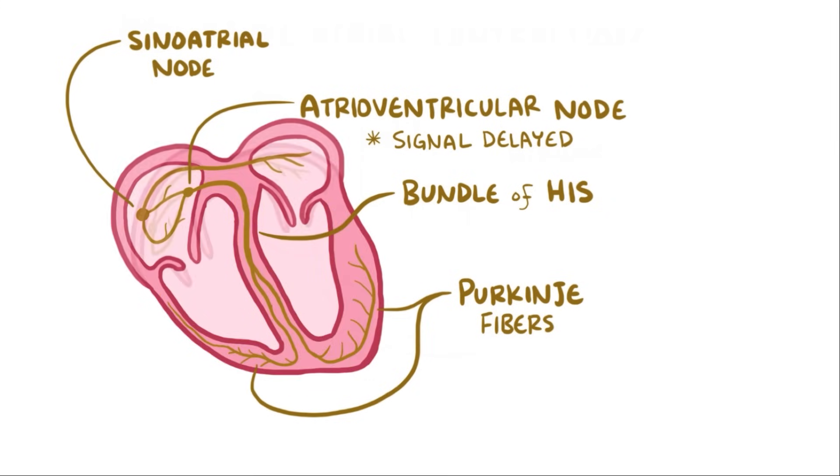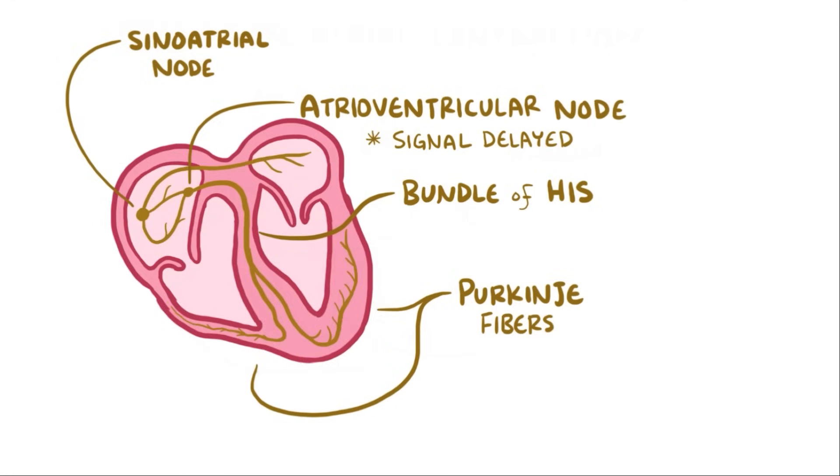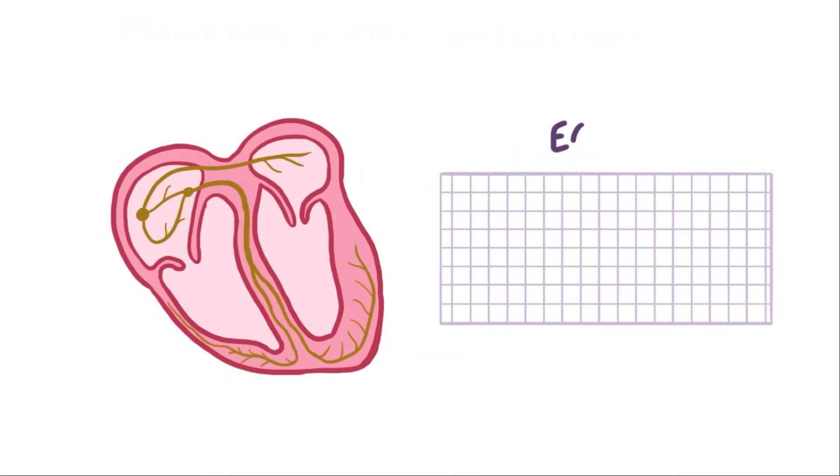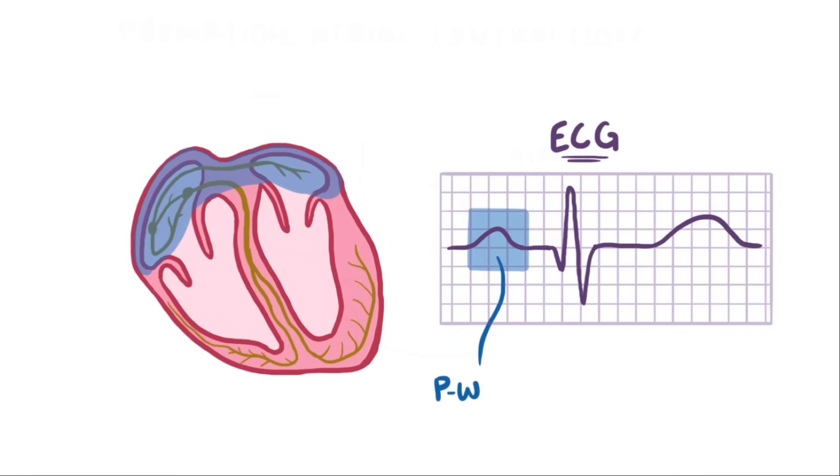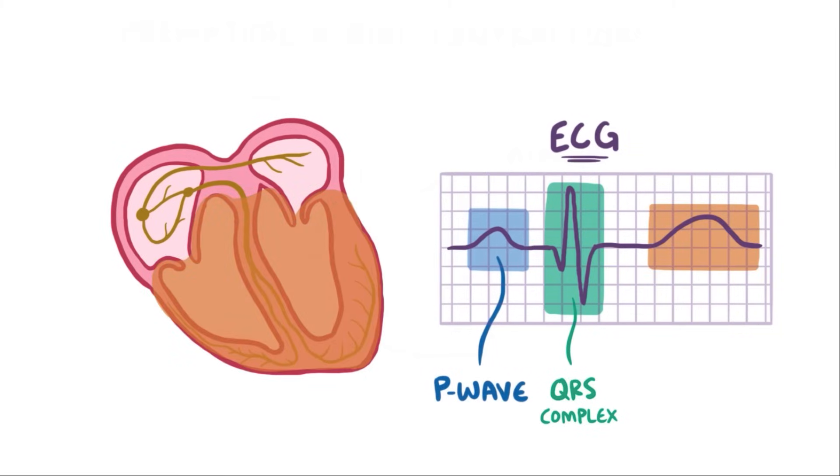So in a healthy heart, the upper chambers contract first, then shortly after the lower chambers contract. On an electrocardiogram, or ECG, which measures the electrical activity of the heart via electrodes that are placed on the skin, the atrial depolarization and therefore its contraction is seen as a P-wave. The ventricular contraction is seen as a QRS complex, and the ventricular repolarization and therefore its relaxation is seen as a T-wave.